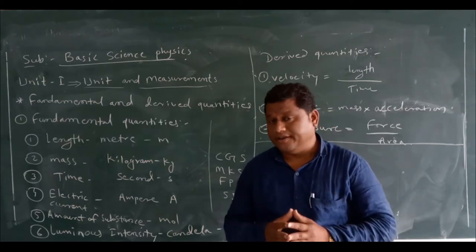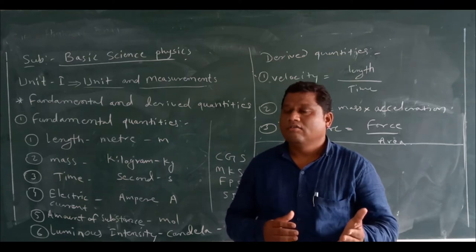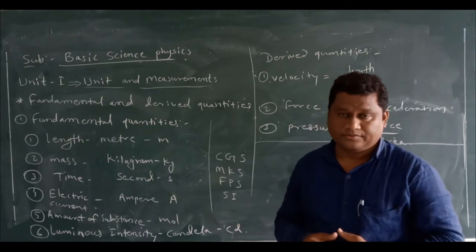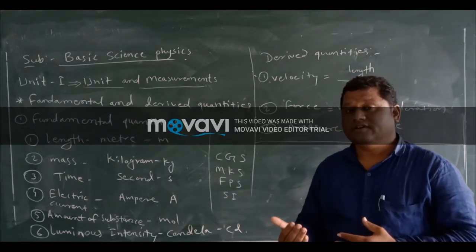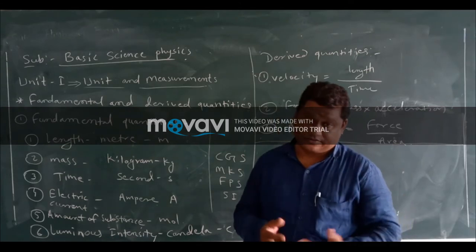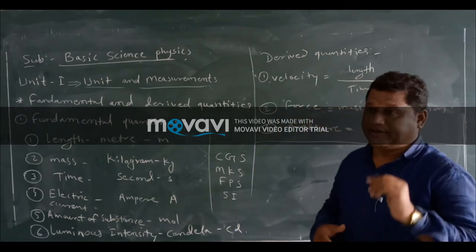Scalar quantity has only magnitude, while vector quantity represents magnitude as well as direction. For example, distance and displacement.